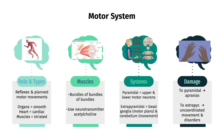Deficits in the pyramidal system, or the motor cortex and association cortex, can cause apraxias, or various inabilities to carry out movements despite there being no muscle paralysis. Damage to the cerebellum can cause uncoordinated movement, and damage to the basal ganglia can cause movement disorders such as Parkinson's and Huntington's.